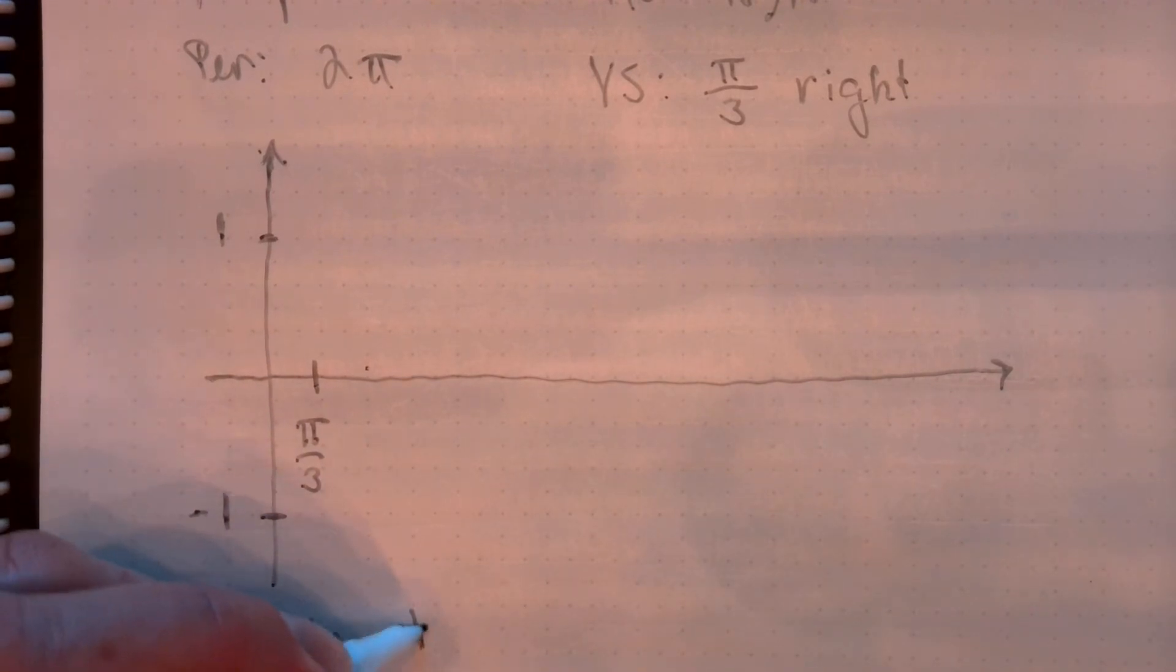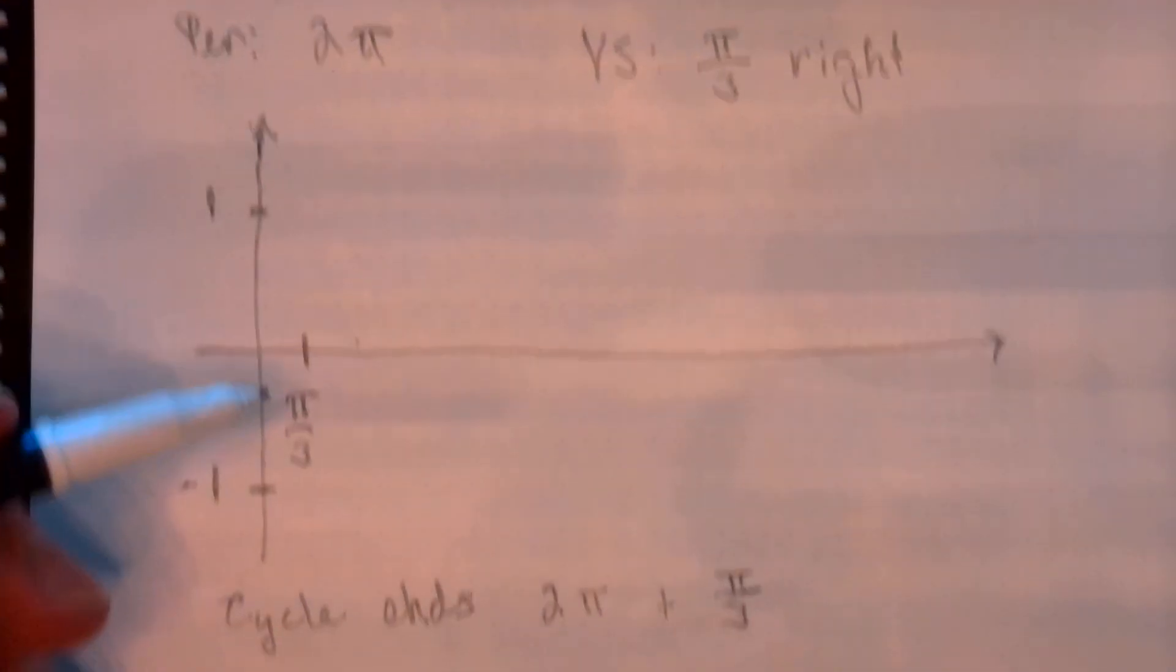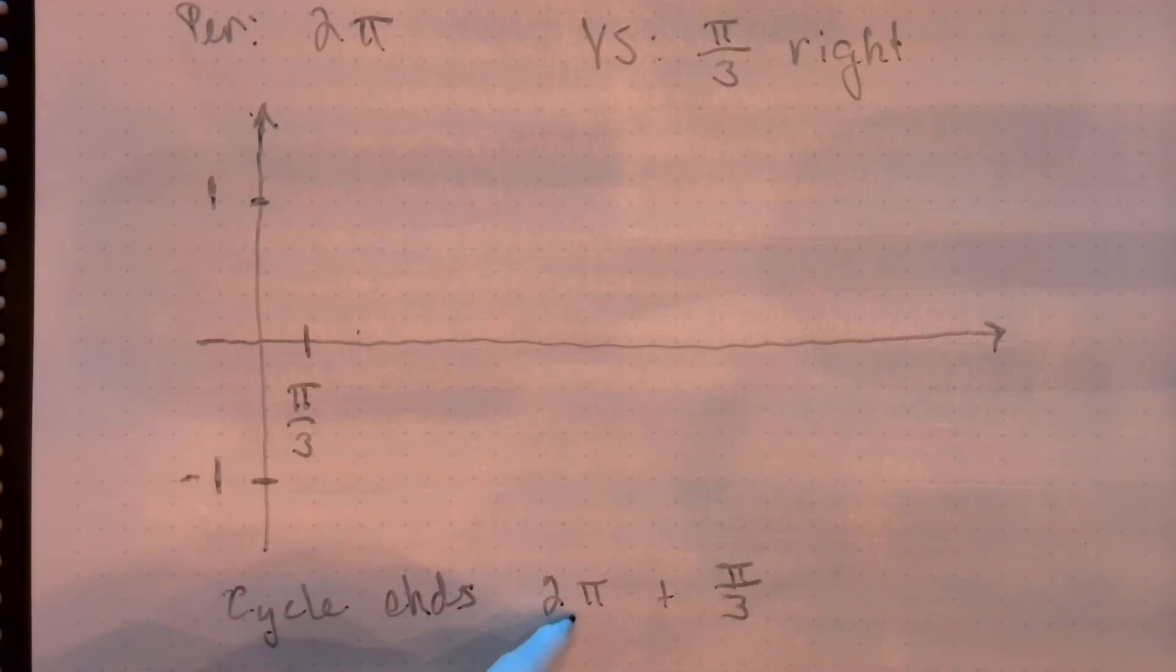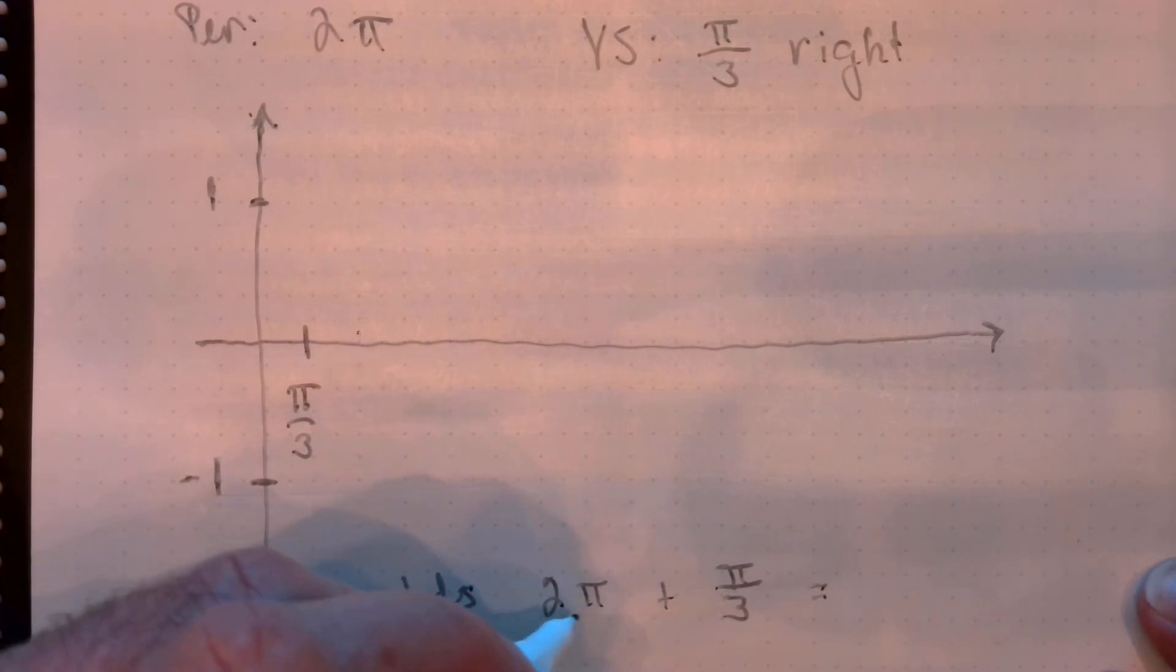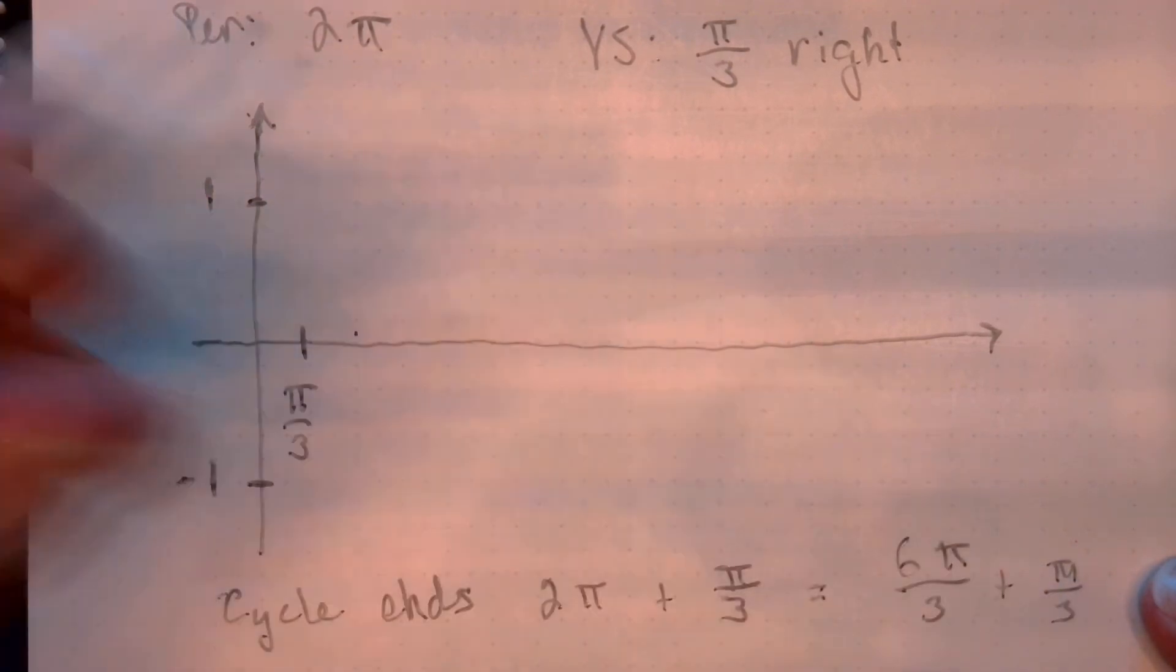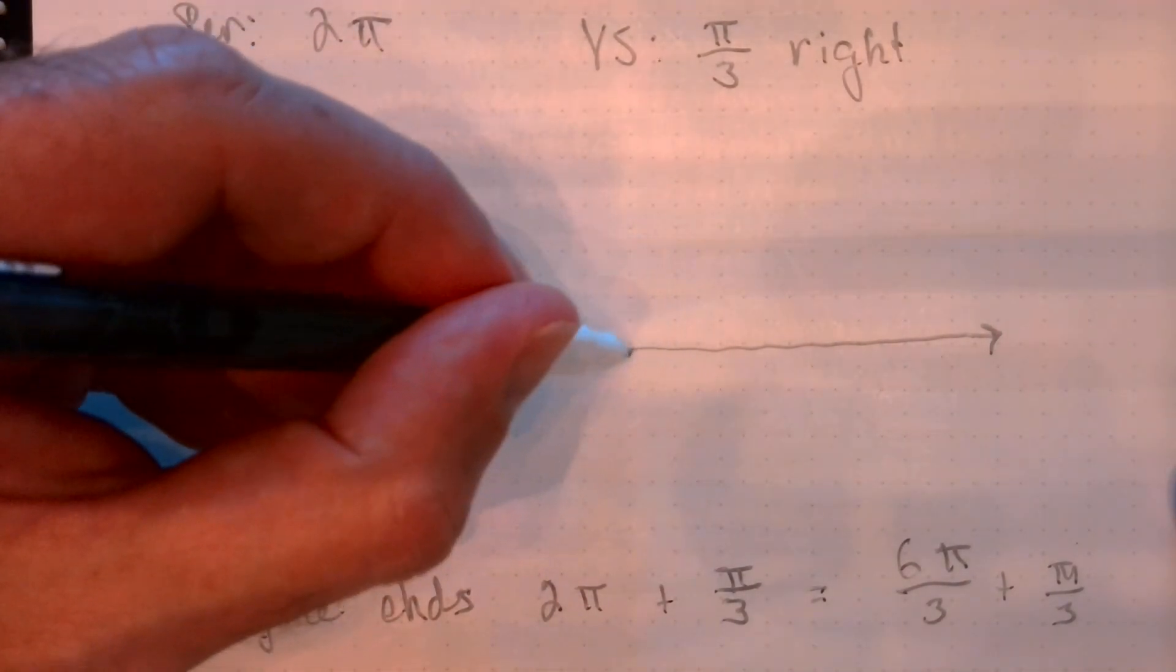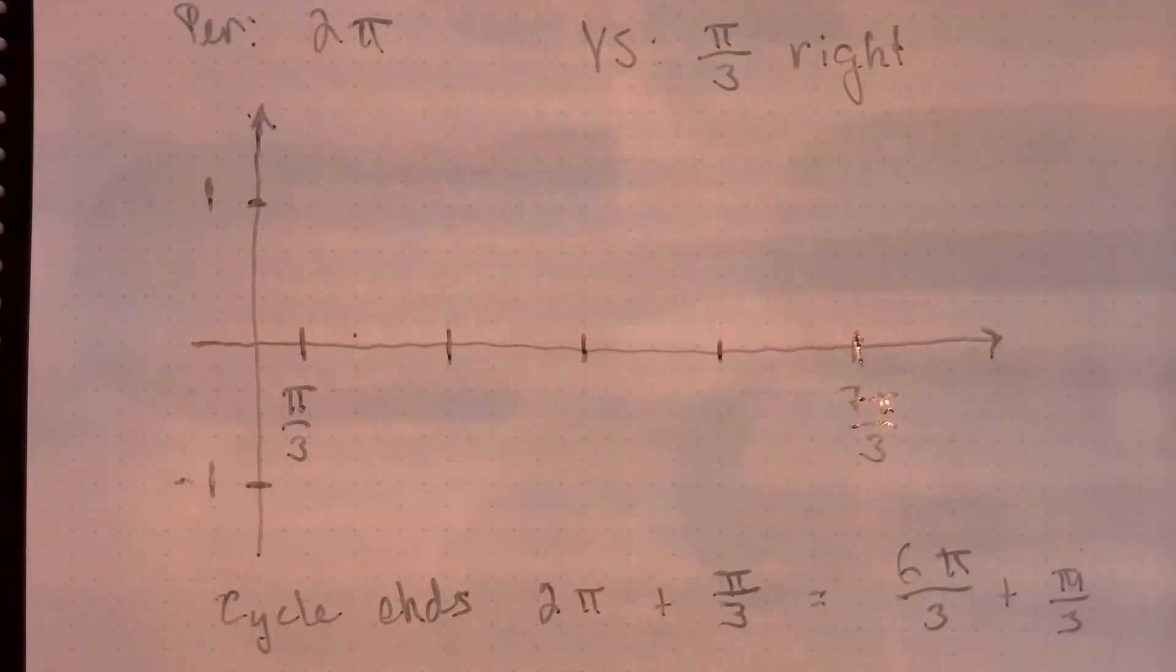Now, down here, I'm going to do a little calculation. Cycle ends two pi plus pi over three, right. So, this is where my cycle is going to start. And then, a complete cycle is going to take two pi units. So this would be seven pi over three, because if I do a common denominator here, this would be six pi over three plus pi over three. So seven pi over three, I should divide that into four equal pieces. One, two, three, four. So seven pi over three.